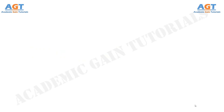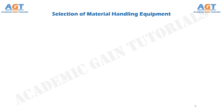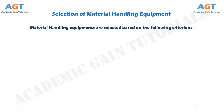Into the topic. Selection of material handling is an important decision as it affects both cost and efficiency of the handling system. Let's look in detail at which factors are taken into consideration in the selection of material handling equipment.